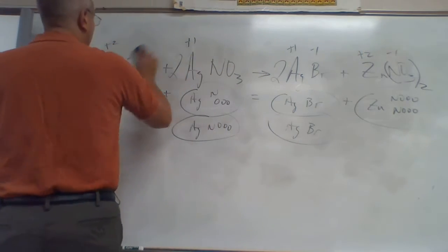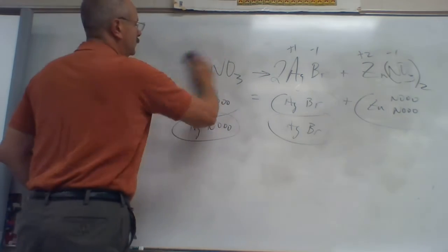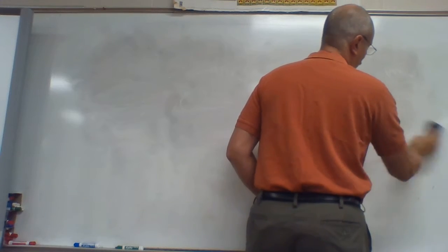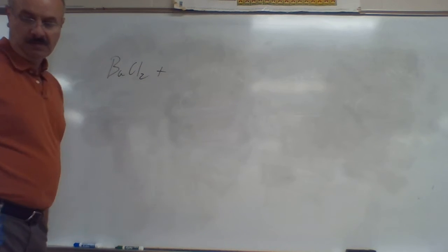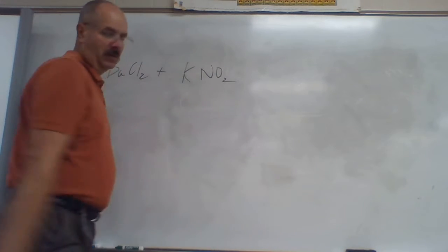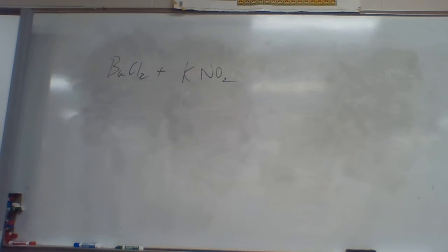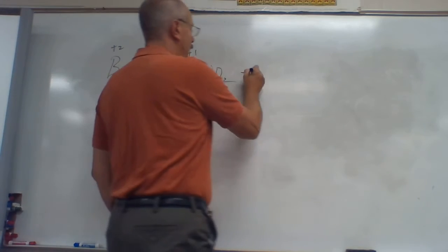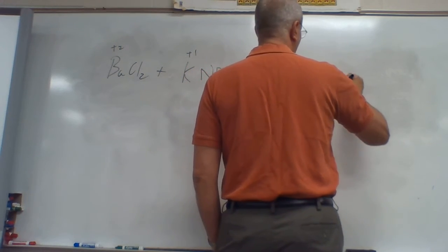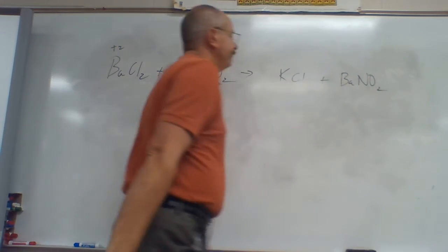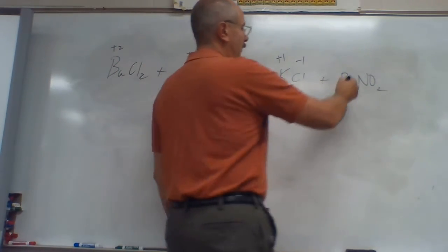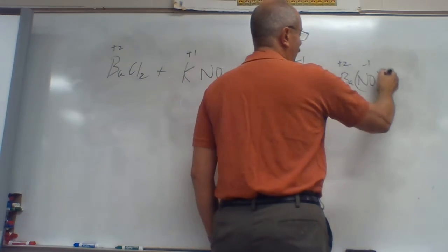Last one in the double replacement. BaCl₂ — Ba would be a plus two, the other would be a plus one. There's my two positives, they're going to trade. So K is going to join up with Cl, plus Ba joins up with NO₂. Then I do my charges: K is plus one, Cl is minus one. Ba is plus two, NO₂ is minus one — gotta crisscross that and put a two.